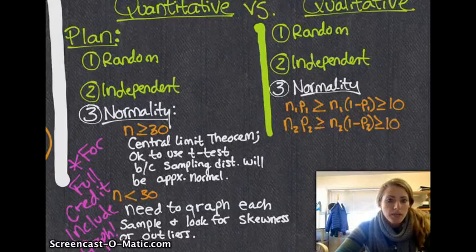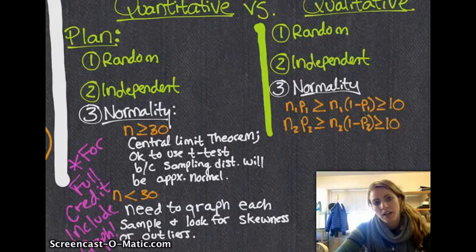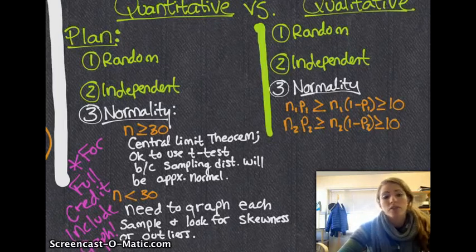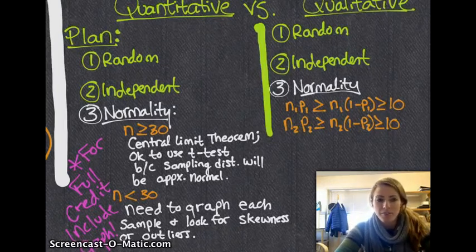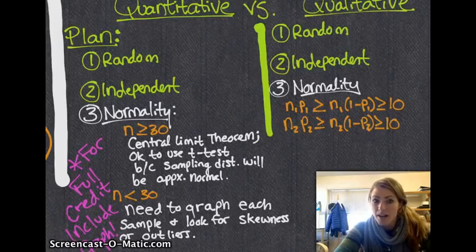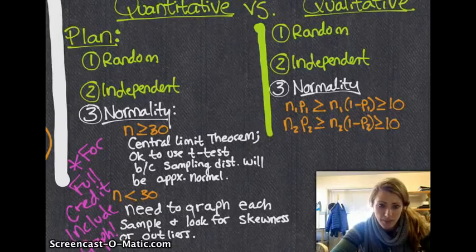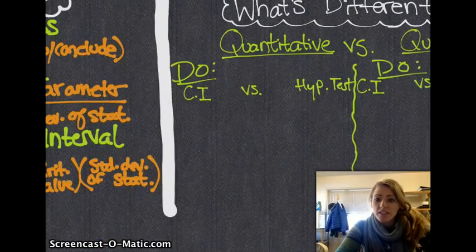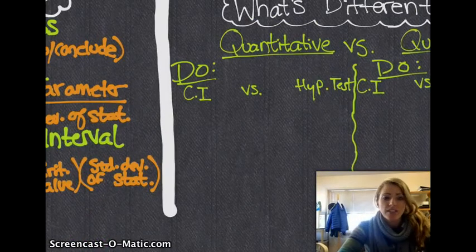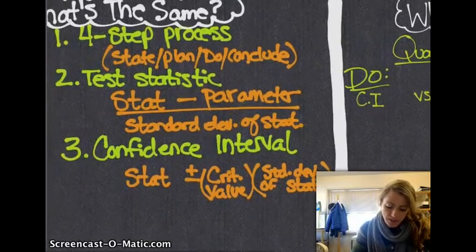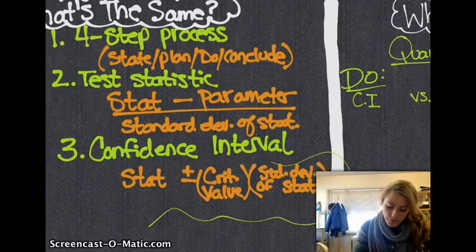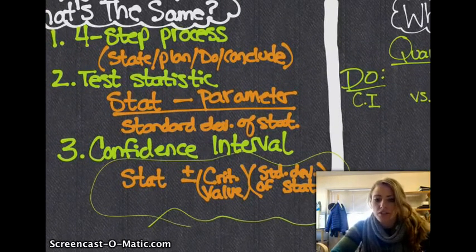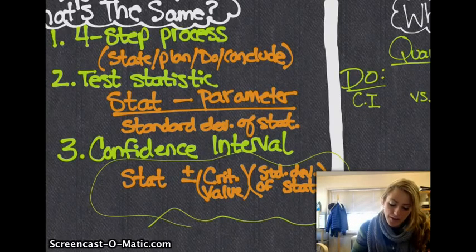The do stuff gets a little more complicated, depending on if you're doing a confidence interval or a hypothesis test. Things will be different, but still kind of the same as everything that we've been doing before. The general picture is still exactly the same. Quantitative data means if you're doing a confidence interval, you still go back to this basic formula, your statistic plus or minus your critical value times standard deviation of the statistic.